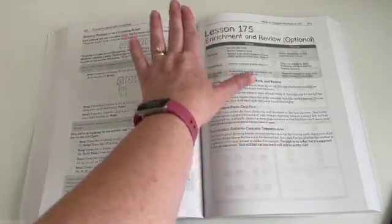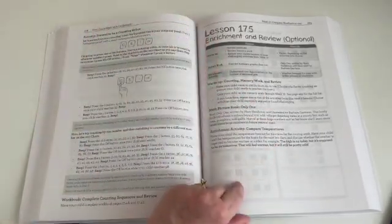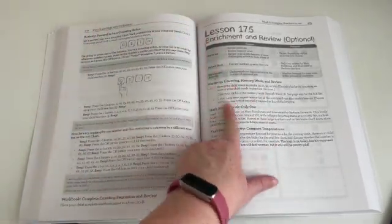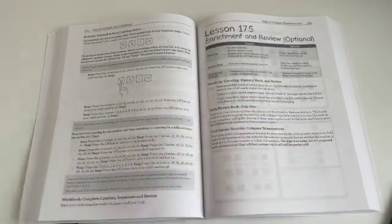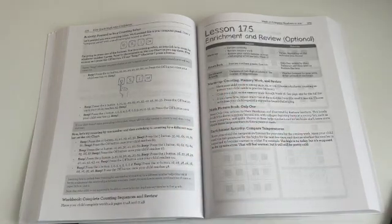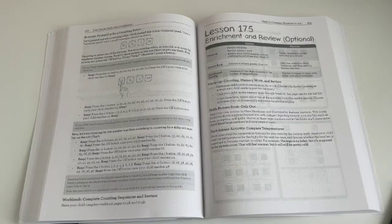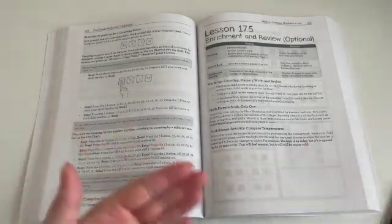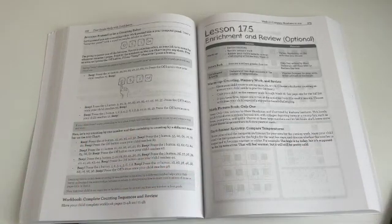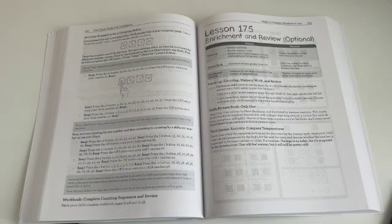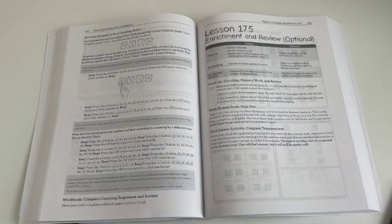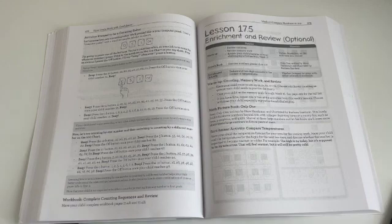And then for lesson 17 on enrichment and review activity, we're going to be warming up counting memory work and review. Oh, I forgot to mention the memory work. There is memory work. And in the back, there is a list of all the memory work. So if you are a classical homeschooler, you will appreciate that. Memory work is just basically things your child should memorize. So I'll show you an overview of what the memory work is each day, but I forgot to mention that.